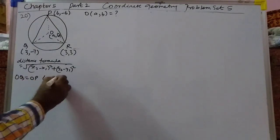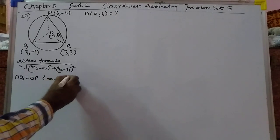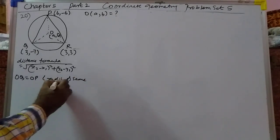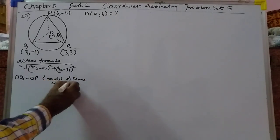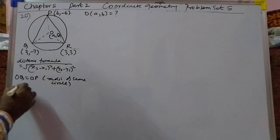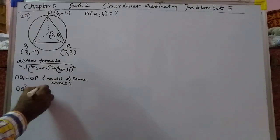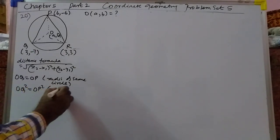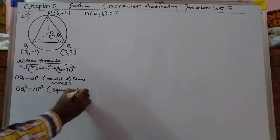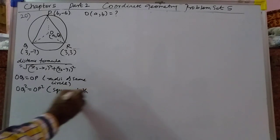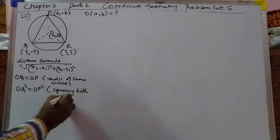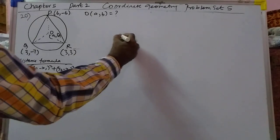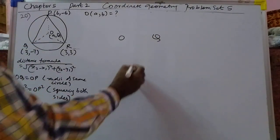That is the radius of the same circle. So squaring both sides — let's go square. This is point P, and this is another point.